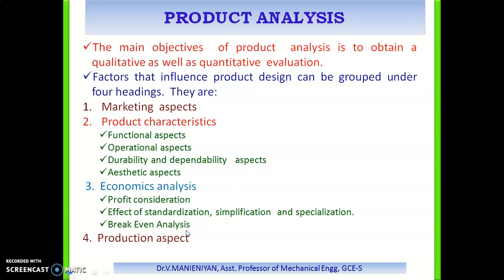Some of the factors influencing product design can be grouped under four categories: the marketing aspect and production categories. In the production categories, we have classified functional aspect, operational aspect, durability and dependability, and aesthetic aspects. There is also economic analysis, which classifies product consideration, the effect of standardization, simplification, and specialization. The fourth category is production inspection — these four categories are used as factors to be considered for product analysis.